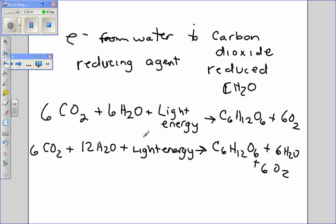The main thing to get from both of these equations is that CO2 is reduced by the addition of hydrogen atoms to form glucose and this requires light energy.